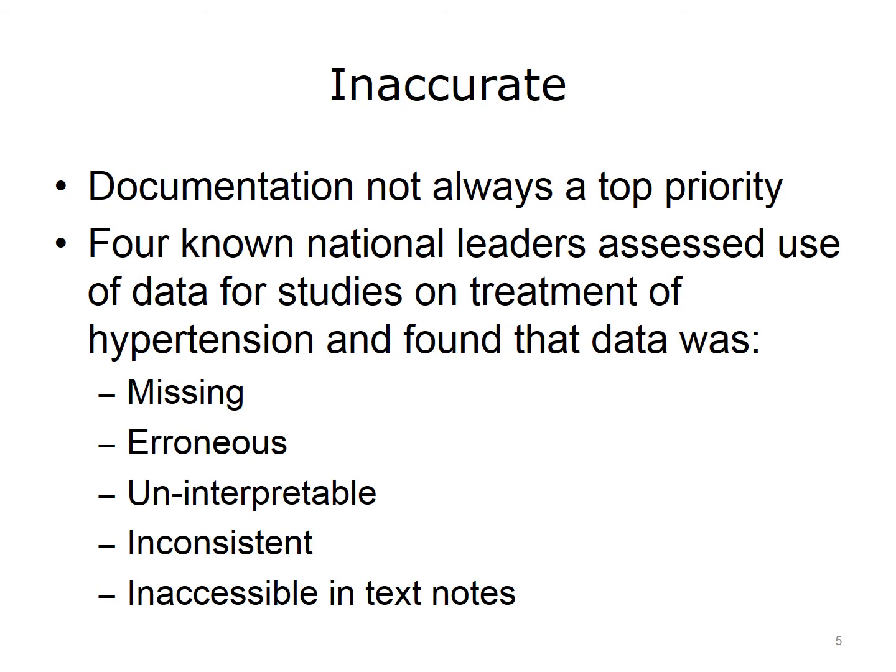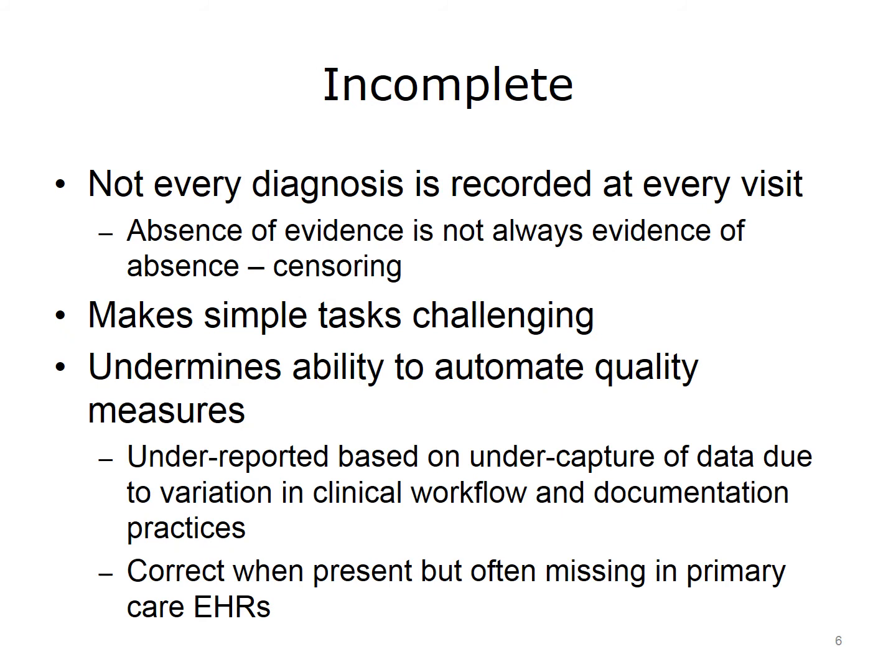The data in the electronic health record may be inaccurate. Documentation is not always a top priority for busy clinicians, and for a variety of reasons they may enter data into the record that's not accurate. One analysis of EHR systems used by four known national leaders in healthcare assessed the use of data for studies on the treatment of hypertension. They found five categories of reasons why the data were problematic: some data was missing, other data was erroneous, some data was uninterpretable, other data was inconsistent, and a great deal of data was inaccessible in text notes.